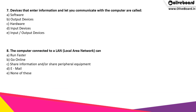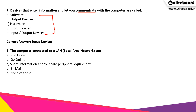Devices that enter information and let you communicate with the computer are called what? One of the following is a device that lets us communicate with the computer and also helps us enter information. The correct answer is option 4, which is input devices. Input devices help us enter information, and by entering information, we can communicate with the computer.